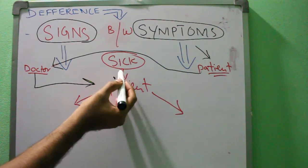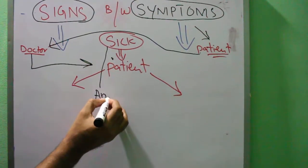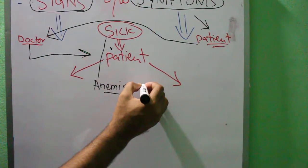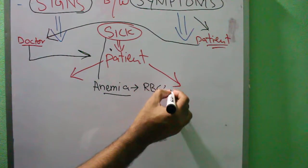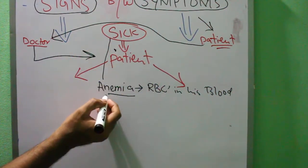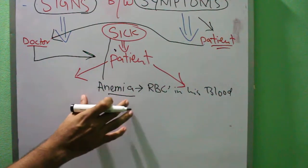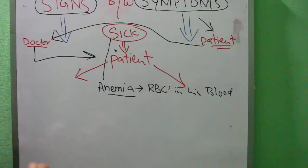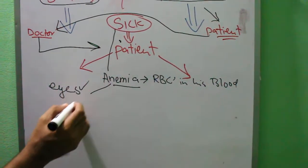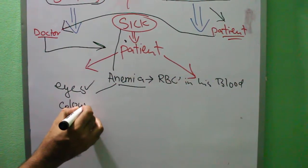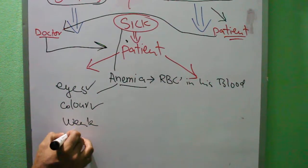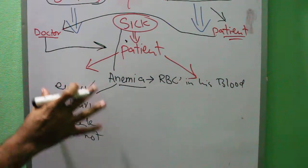For example, if somebody is suffering from anemia — anemia means there is a deficiency of RBCs in the blood. Now, what does the doctor see in the patient? In anemia, the patient is weak. The doctor looks at the patient's eyes and overall color to see whether the patient is weak or not. This is what the doctor is seeing in the patient — these are signs.